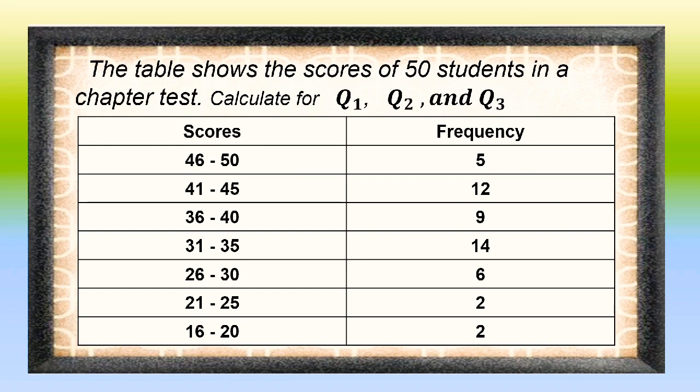Let us take a look at this example. The table shows the scores of 50 students in a chapter test. We are asked to calculate the first quartile, second quartile, and third quartile. The table shows the scores in different class intervals and their respective frequencies.